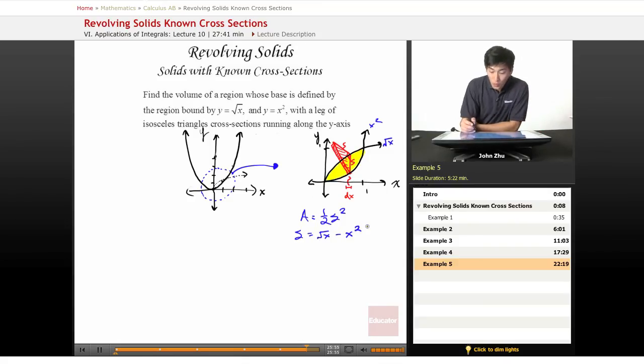We have to find the integral from this to here, so zero to one. Let's set up our volume. Volume equals from zero to one, one-half s squared.